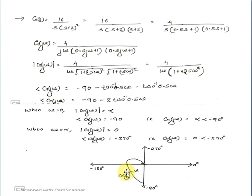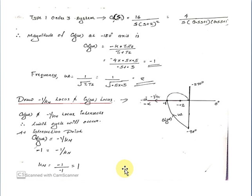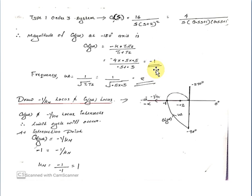At the angle equation of minus 180°, we substitute ω. For a type 1 order 3 system, G(jω) equals minus K·T1·T2 divided by (T1 + T2). Here T1 and T2 are equal to 0.5; substituting gives G(jω) equals minus 1. The frequency is ω equal to 1 by root(T1·T2), which equals 2.